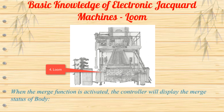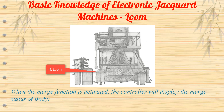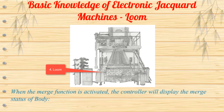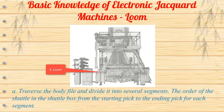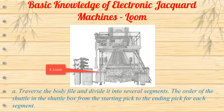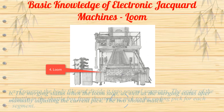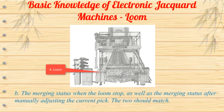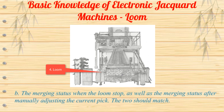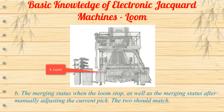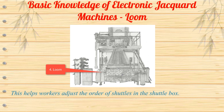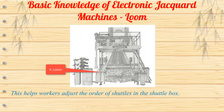When the merge function is activated, the controller will display the merge status of the body. A: Traverse the body file and divide it into several segments — the order of the shuttle in the shuttle box from the starting pick to the ending pick for each segment. B: The merging status when the loom stops, as well as the merging status after manually adjusting the current pick — the two should match. This helps workers adjust the order of shuttles in the shuttle box.